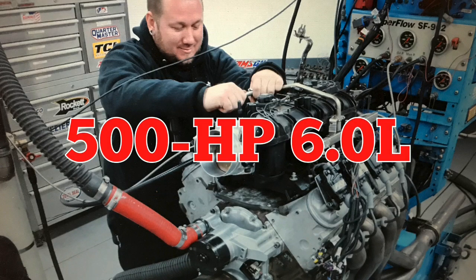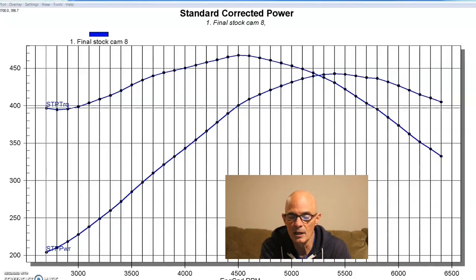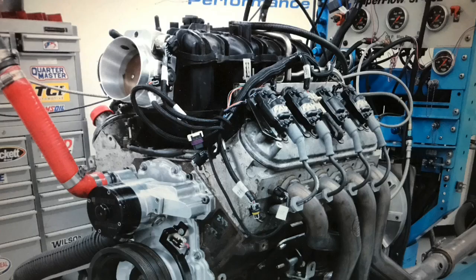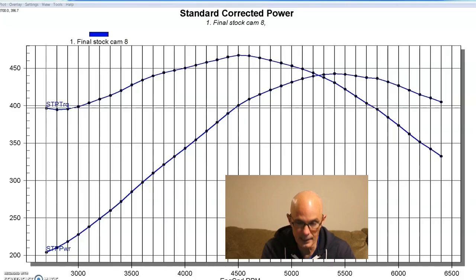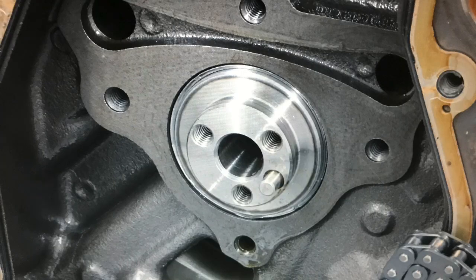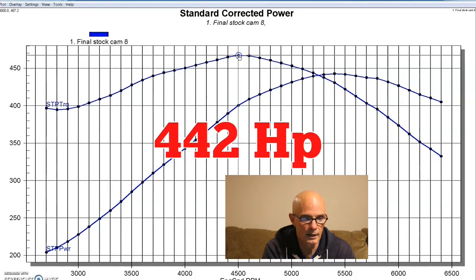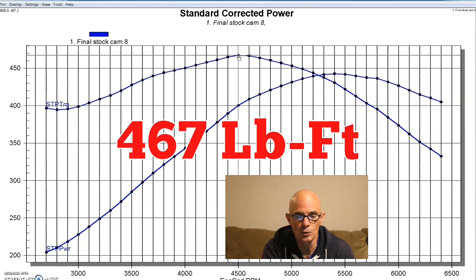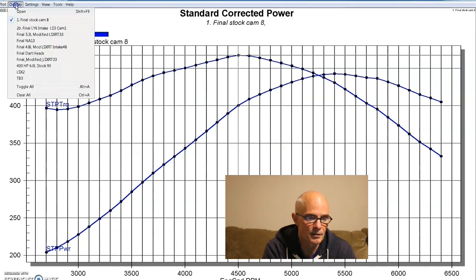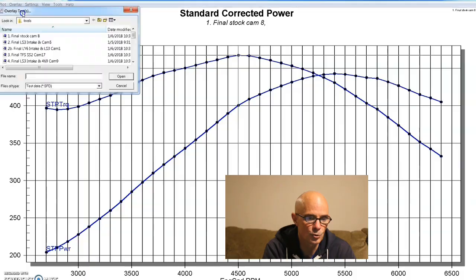Now that we've taken a look at the 4.8, 5.3, and 5.7 combinations, we'll take a look at the 6 liter. This is actually a stock 6 liter LY6 with a factory LQ4 camshaft in it. And this thing made 442 horsepower and 467 foot-pounds of torque. Here's what happened after we added the Sloppy Stage 2 cam.